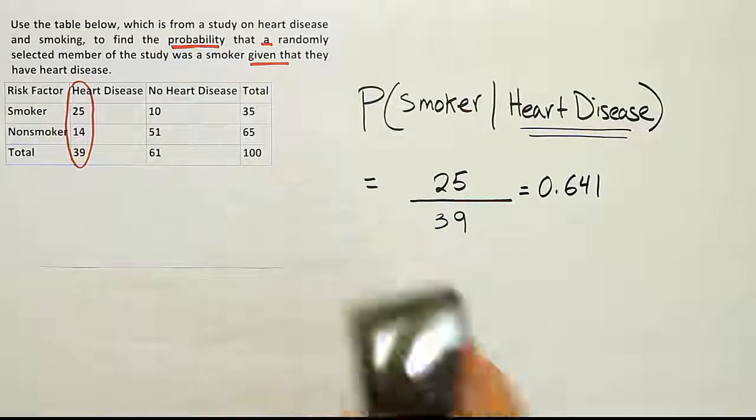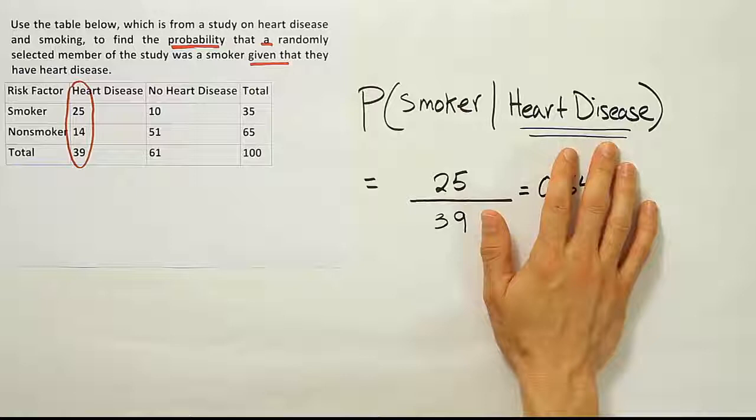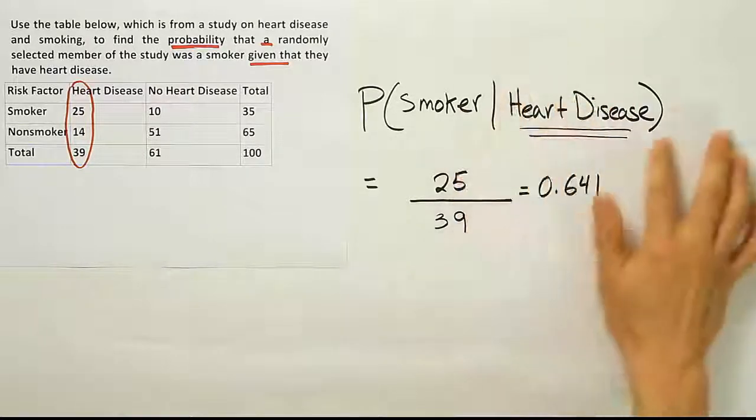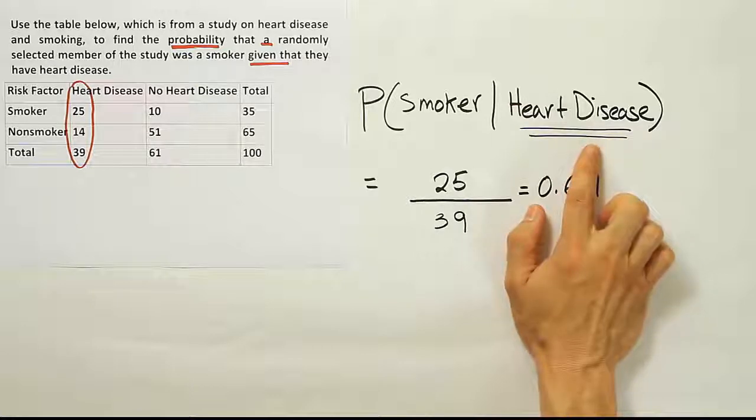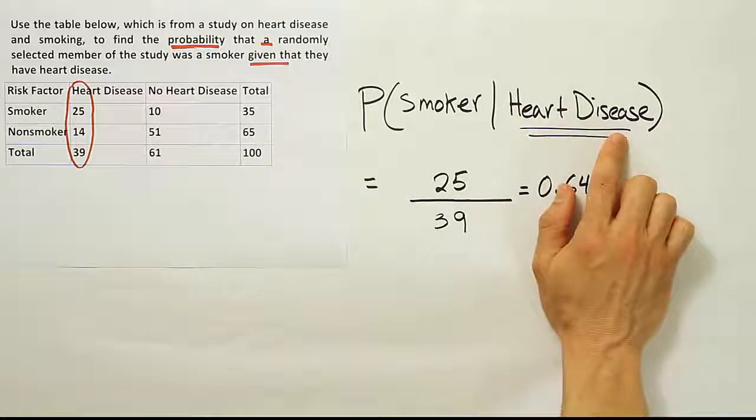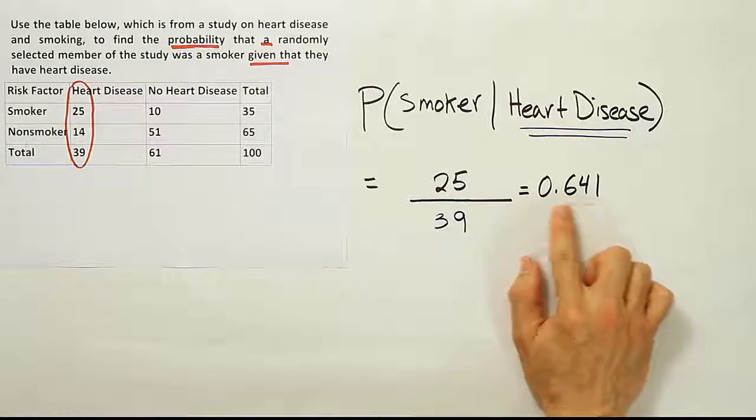One more time on the interpretation part. What we know here to be true for sure is that the subject has heart disease. That's the given condition. We assume that that's true. Given that the person has heart disease, what's the probability that they were smokers? About 64.1 percent.